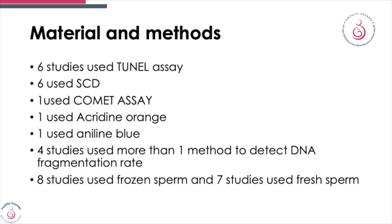The aim of this systematic review was to determine if there was a significant relationship between sperm DNA fragmentation and recurrent pregnancy loss. Studies included: six used the TUNEL assay, six used the SCD, one used the comet assay, one used acridine orange, one used aniline blue, four used more than one method, and eight studies used frozen sperm while seven used fresh sperm.